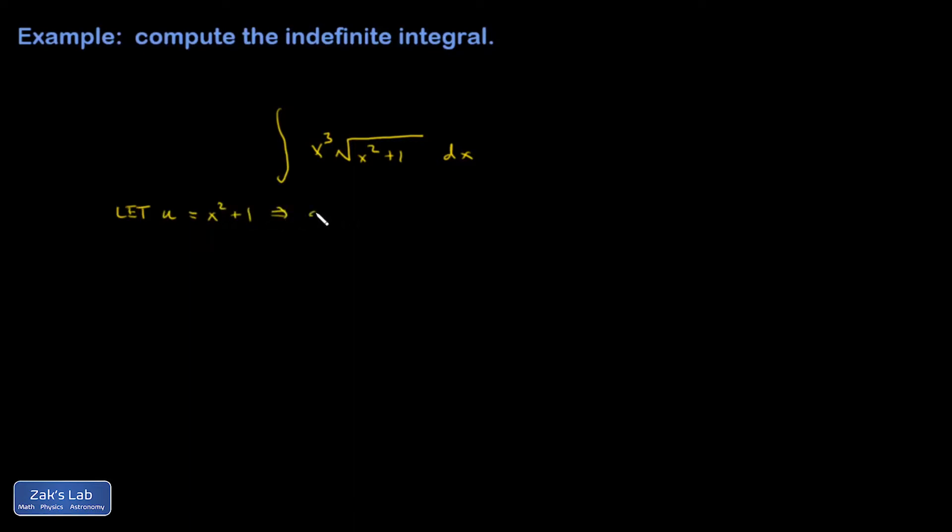That means du is 2x dx. So I have an x I could pull out of this x cubed, and I can build that differential quantity using that. I'm left with a leftover x squared in here when I do that.